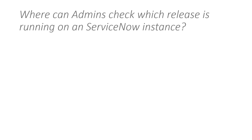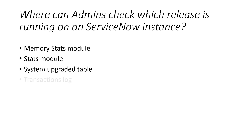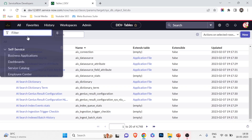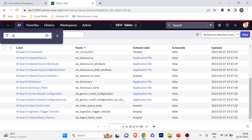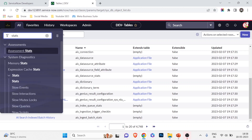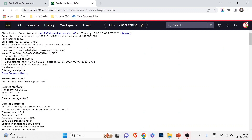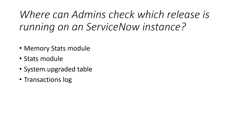Question ten: where can admins check which release is running on a ServiceNow instance? If you type 'stats' and open the Stats module, you can see the version — for example, Tokyo. So the right answer is the Stats module.